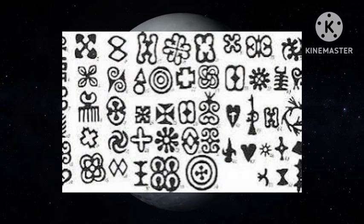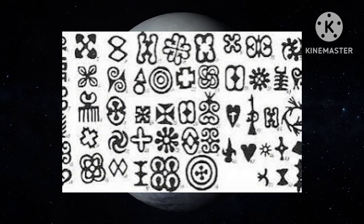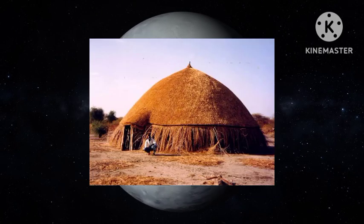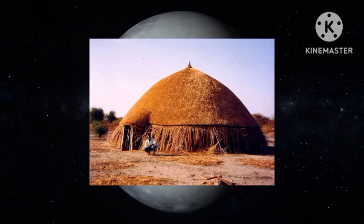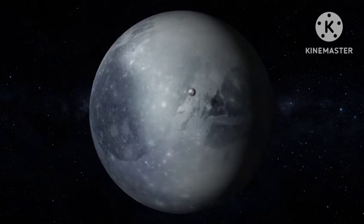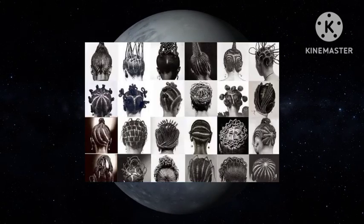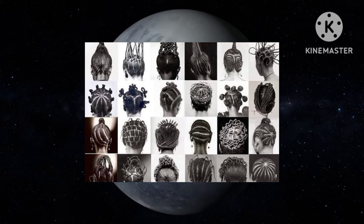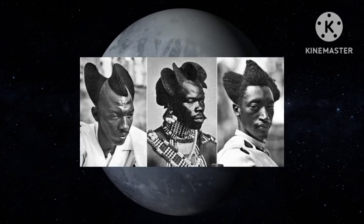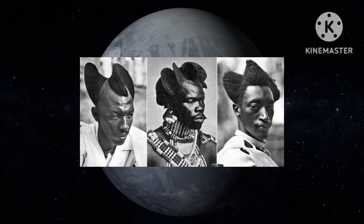And these designs aren't limited to textiles. You'll find intricate geometric patterns in architecture, pottery, basketry, even hairstyles. It's like they're using geometry as a language to express their cultural identity and how they see the world. And that language is full of symbolism. Certain shapes and patterns can represent specific ideas, beliefs, or even historical events.